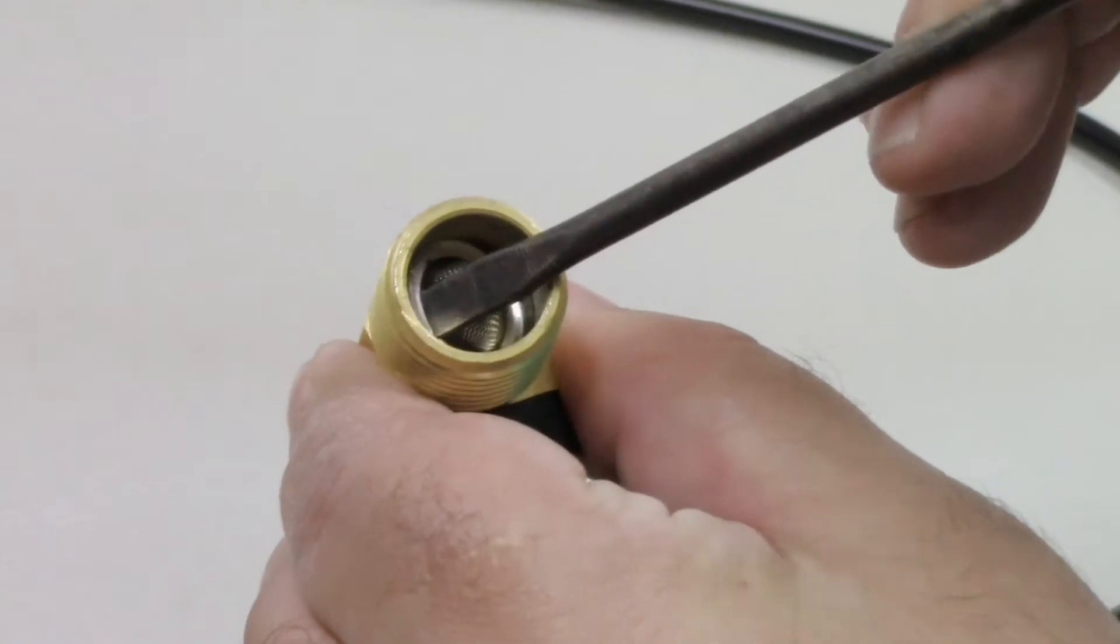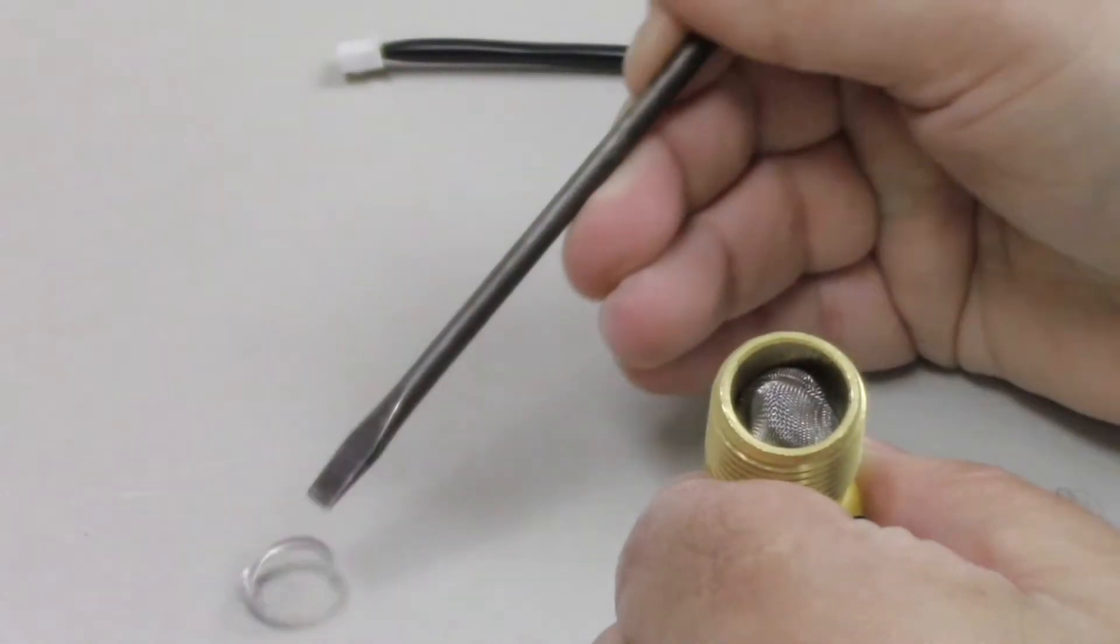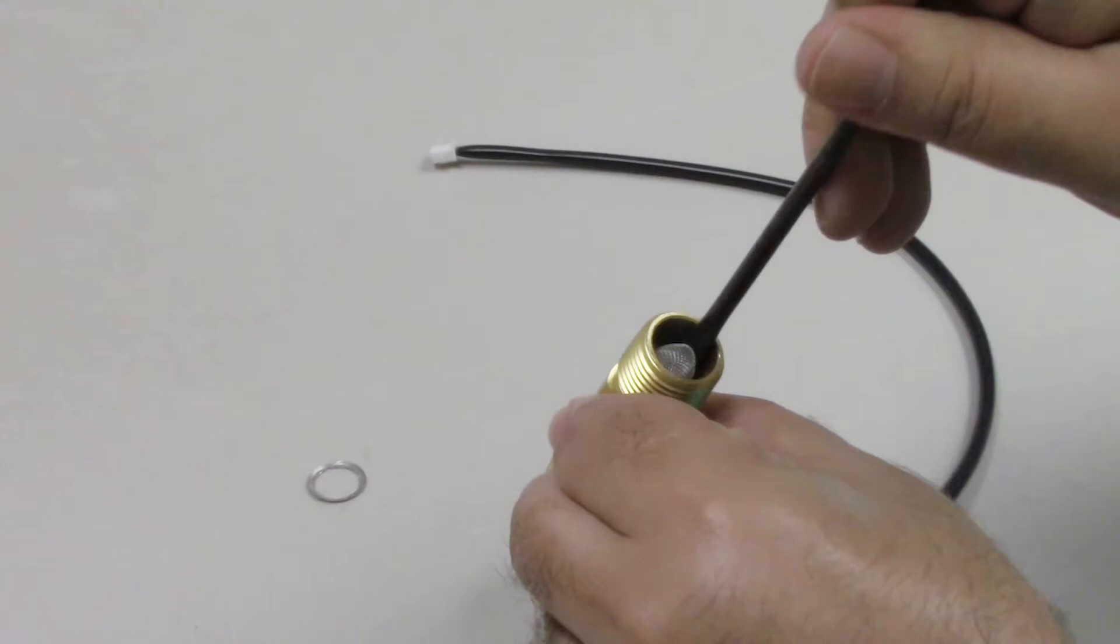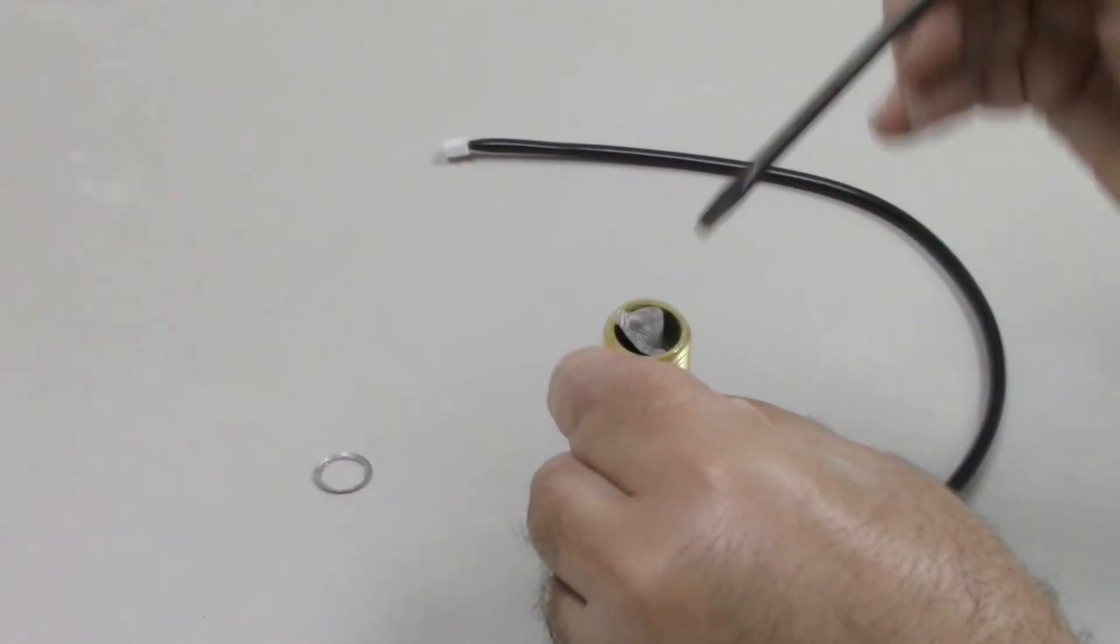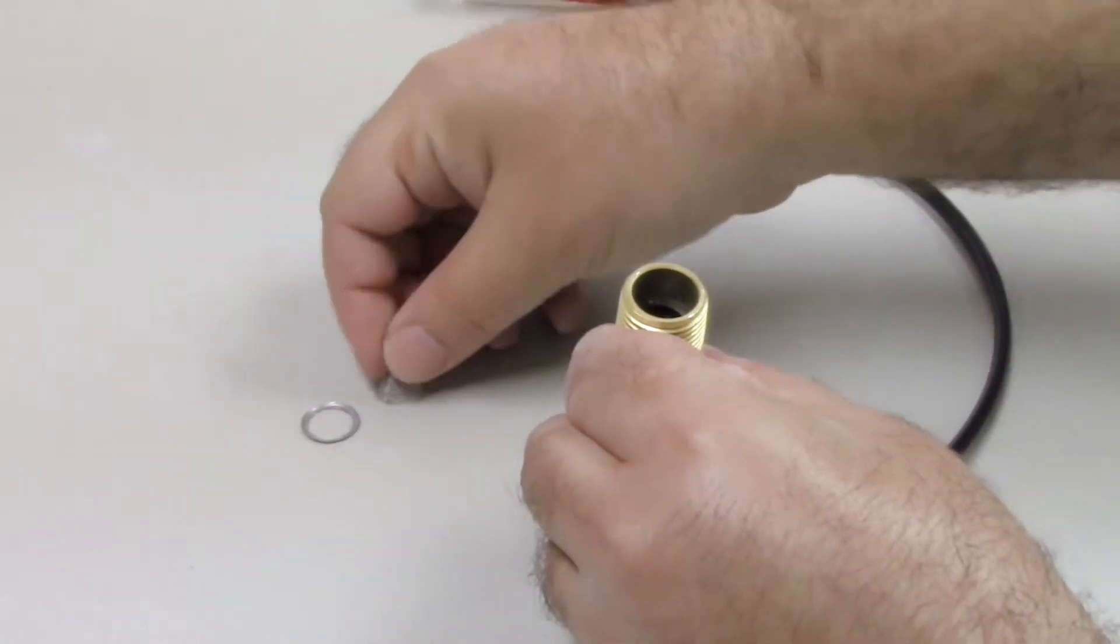You will need to use a flathead screwdriver to remove the metal washer from inside the fitting. Once the washer has been removed, you will then be able to remove the mesh screen located in front of the flow switch.